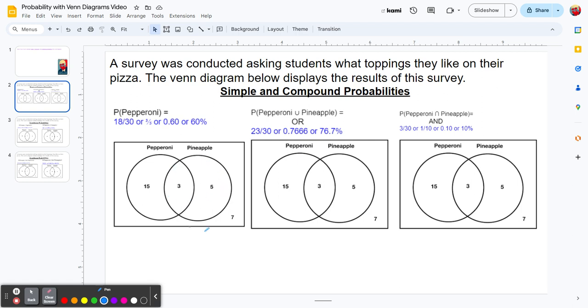In the pineapple circle, there's 3 plus 5, so 8 people prefer pineapple. The number outside both circles, 7, represents people that prefer a different topping or do not prefer pepperoni or pineapple on their pizza.